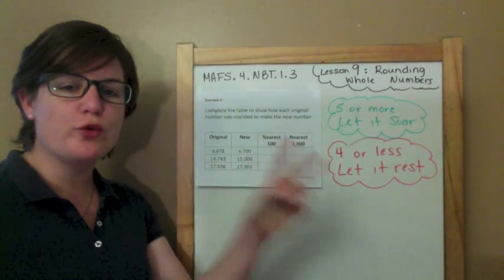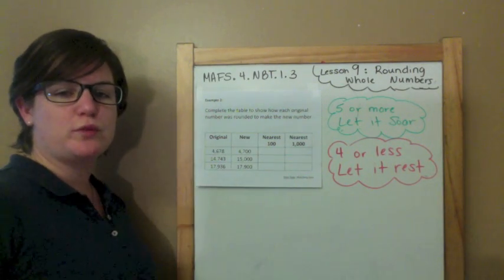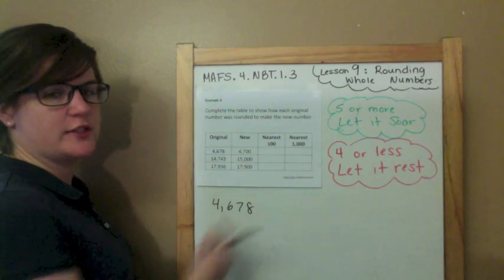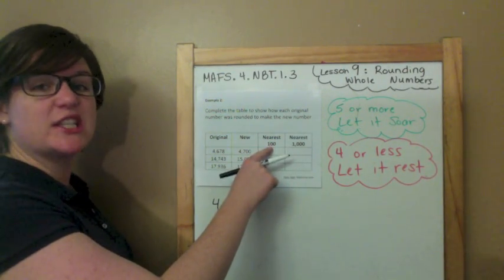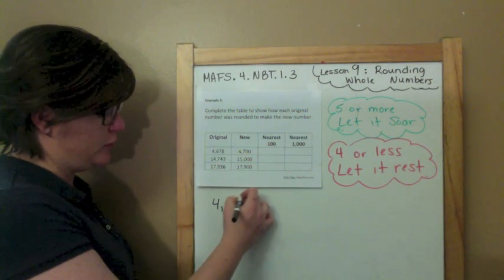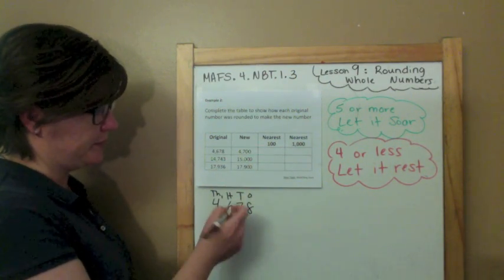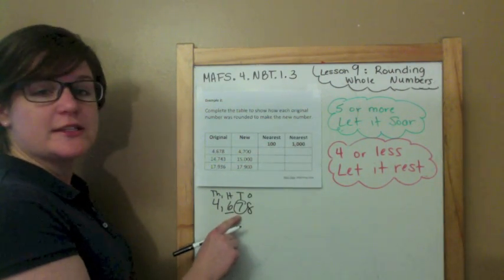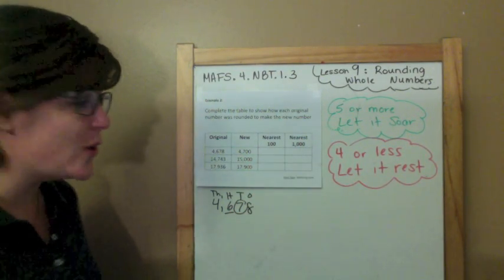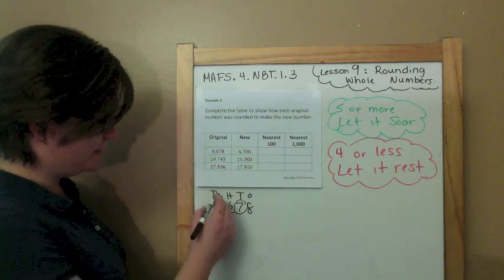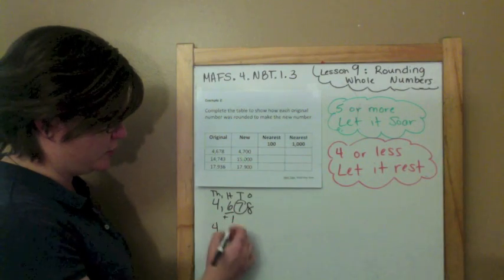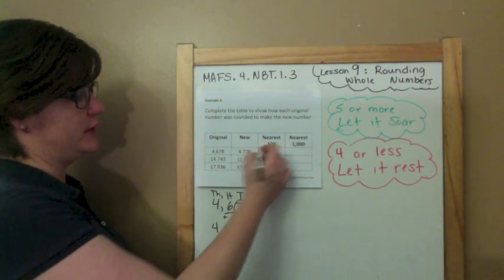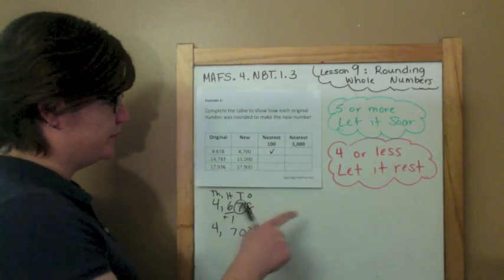Let's move on to example two. It says: complete the table to show how each original number was rounded to make the new number. I'm going to take the original number and test it — was it rounded to the nearest hundred or the nearest thousand? Let's round to the nearest hundred first. Hundreds place is right here — ones, tens, hundreds, thousands. Find and underline the place. Spotlight to the right — seven is five or more, let it soar! Add one to the rounding place: six plus one is seven. Everything else becomes zeros. So it was rounded to the nearest hundred.